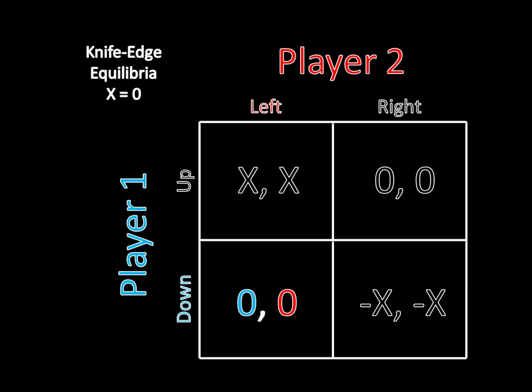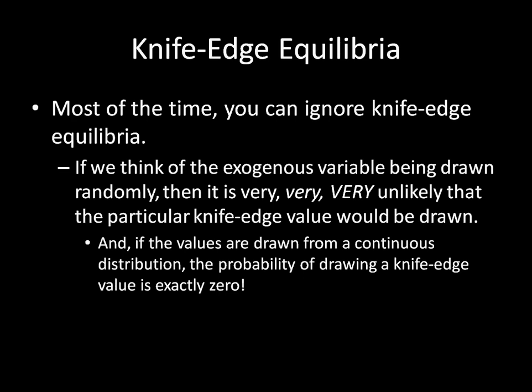Now, when we talk about knife-edge equilibria, we usually sort of brush them to the side and don't really pay much attention to that. And the reason that we ignore these sort of knife-edge equilibria is that if you think of exogenous variables as being drawn randomly from a great pool of numbers. So, for example, suppose this x value was just occurring naturally in nature. And nature could take on any sort of value from negative 1 million to positive 1 million. It could take any whole number between that. Well, if that's the case, then suppose each of those has equal weight.